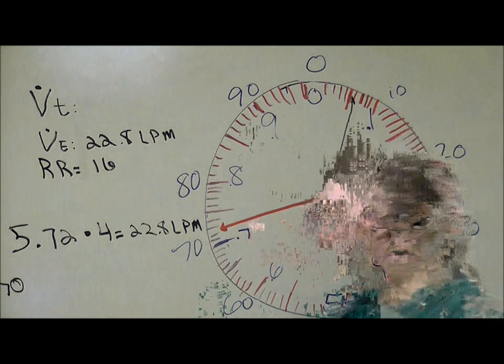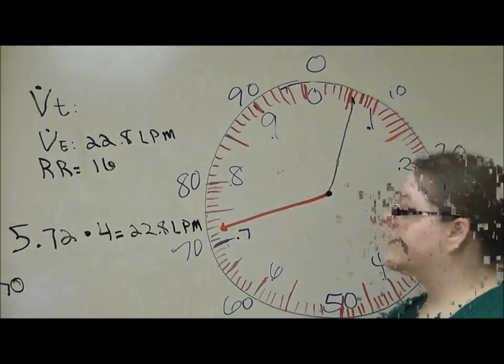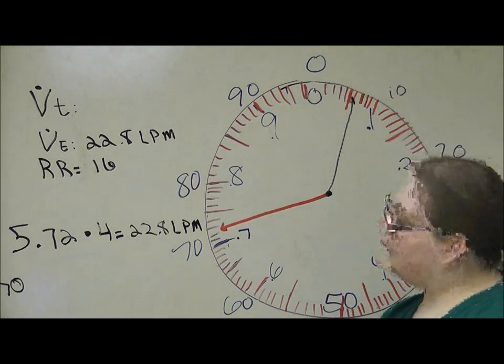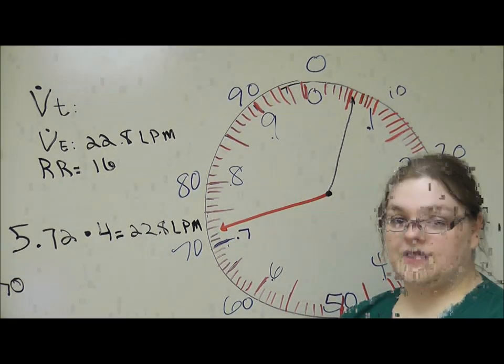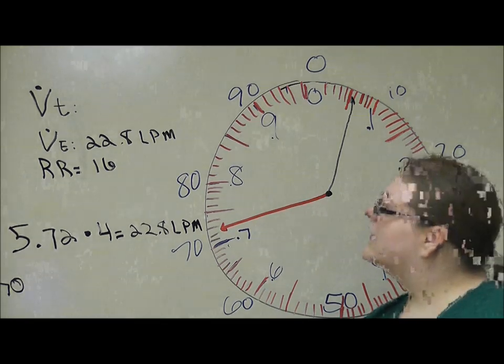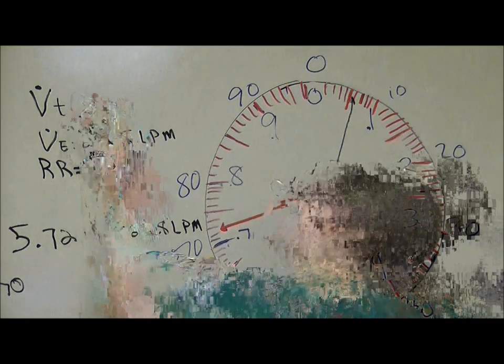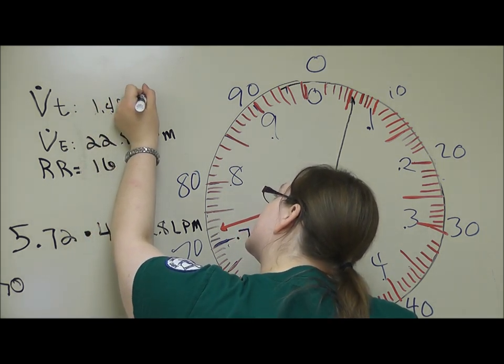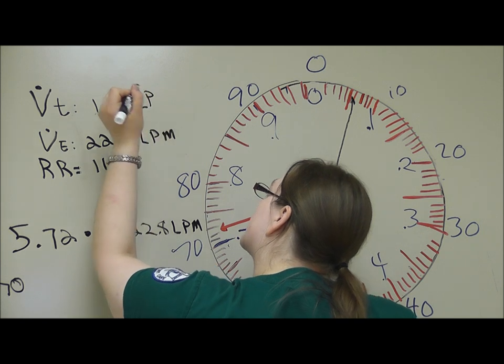Taking this information, we're going to determine my tidal volume. So we're going to divide 22.8 liters per minute by 16 breaths per minute, and we're going to get 1.425 liters per breath.